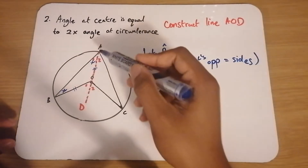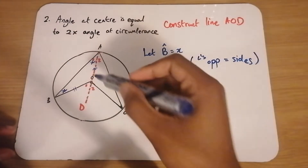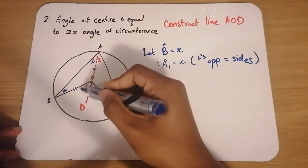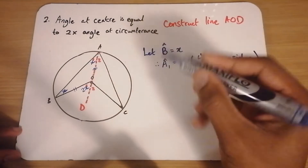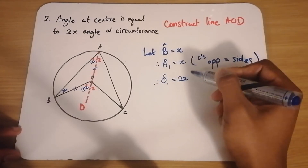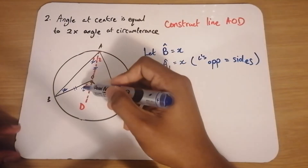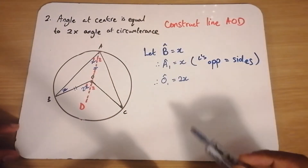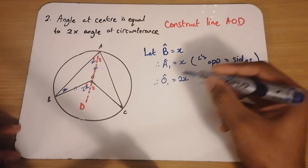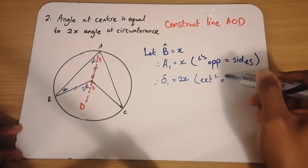Now if angle A1 is X and angle B is X, this exterior angle of the triangle will be equal to 2X. So angle O1 is therefore equal to 2X, because you calculate an exterior angle of a triangle by adding the two interior angles. So X plus X gives the exterior angle of 2X, so angle O1 is equal to 2X — exterior angle of a triangle.